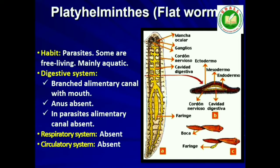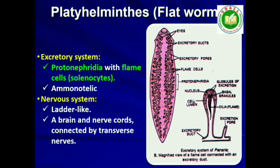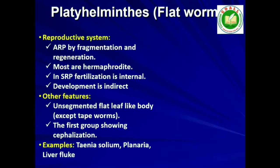Fourth: Phylum Platyhelminthes. They have a dorsoventrally flattened body, hence are called flatworms. These are mostly endoparasites found in animals including human beings. Flatworms are bilaterally symmetrical, triploblastic and acoelomate animals with organ level of organization. Hooks and suckers are present in parasitic forms. Some absorb nutrients from the host directly through their body surface. Specialized cells called flame cells help in osmoregulation and excretion. Sexes are not separate. Fertilization is internal and development is through many larval stages. Some members like Planaria possess high regeneration capacity. Examples: Taenia (tapeworm), Fasciola (liver fluke).